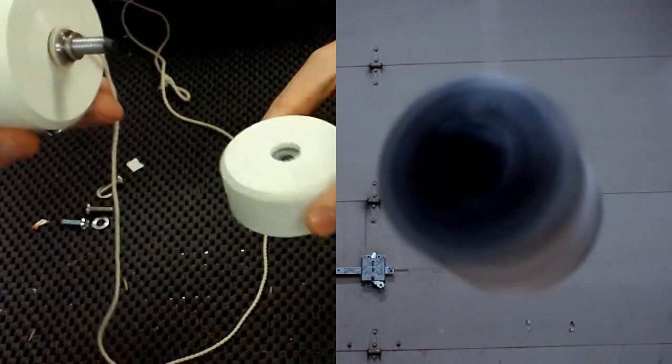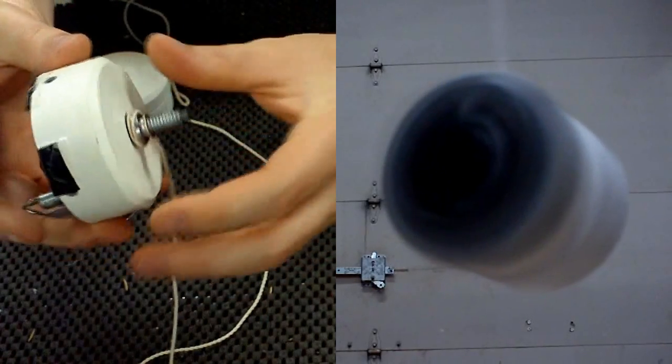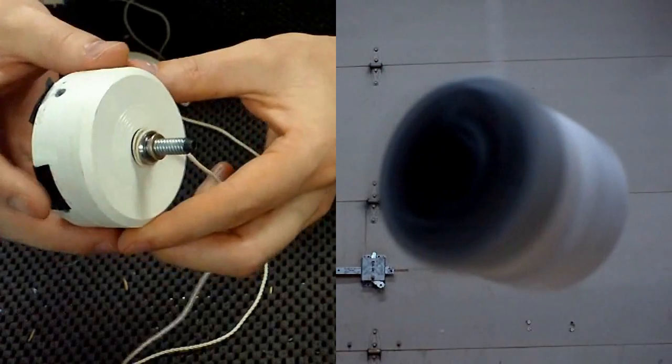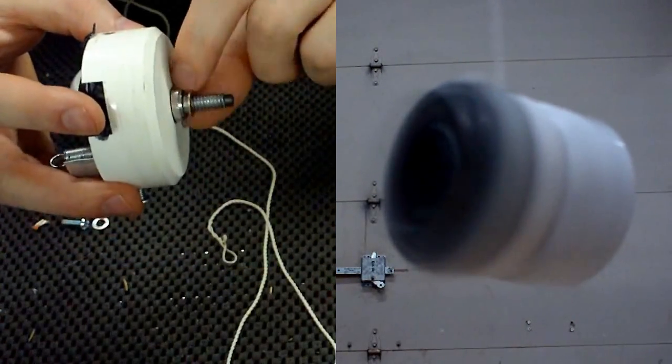As you can see, this side just unscrews. Like I said, a solid piece of PVC pretty much. The string is wrapped around this bearing here in the center.